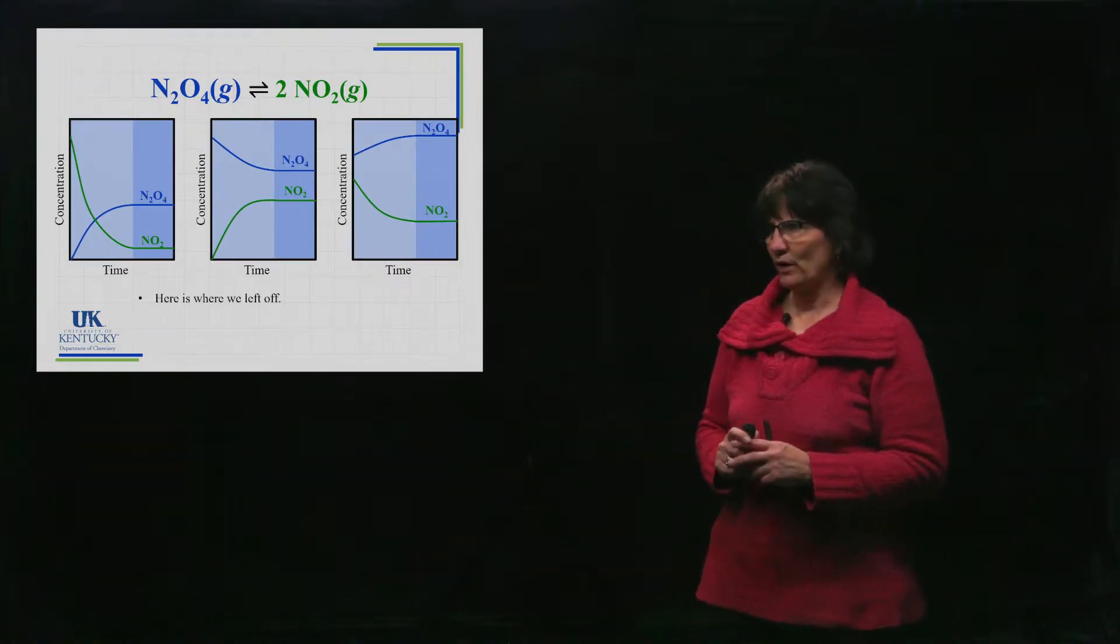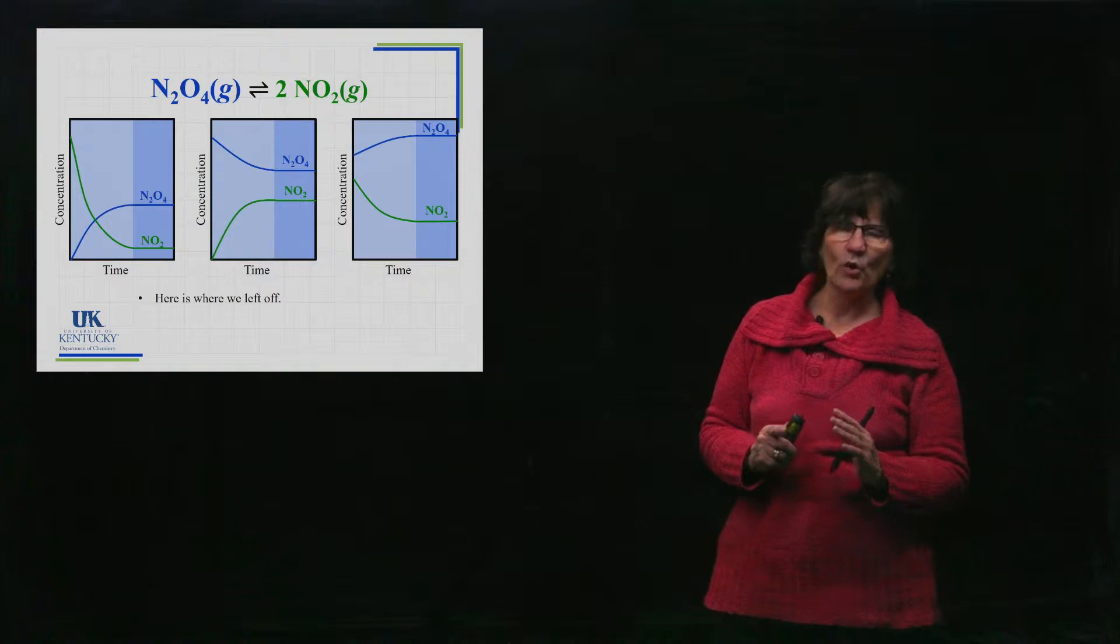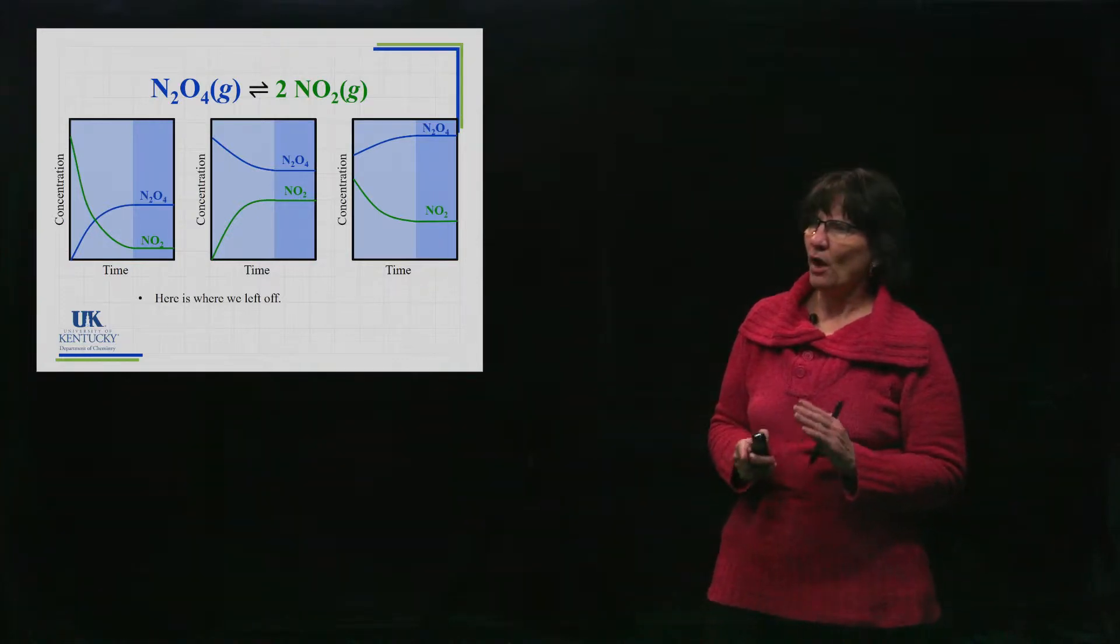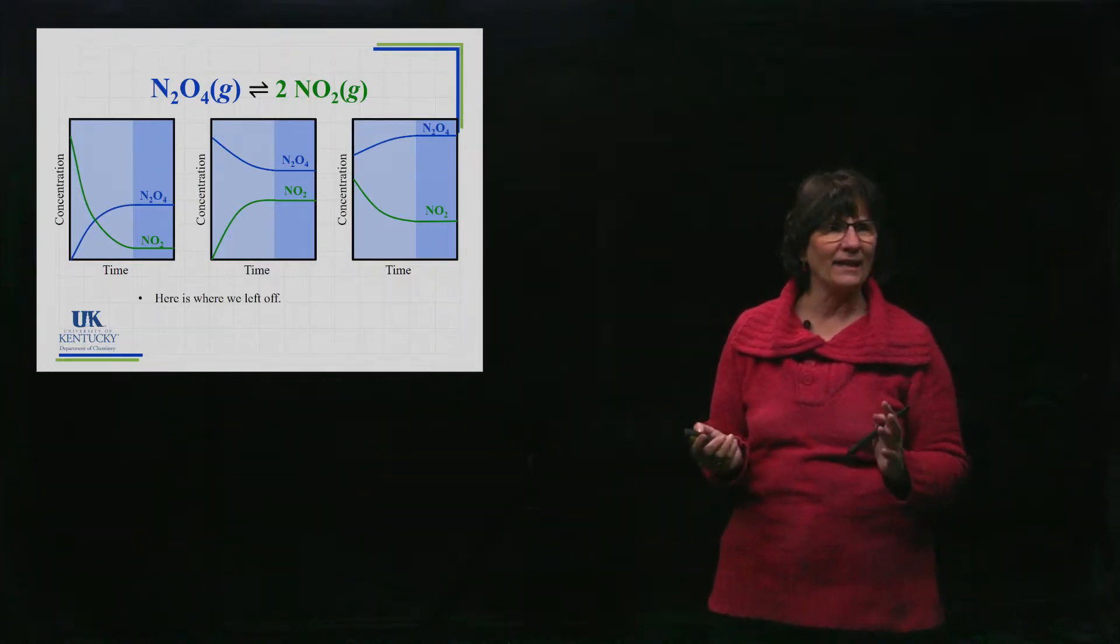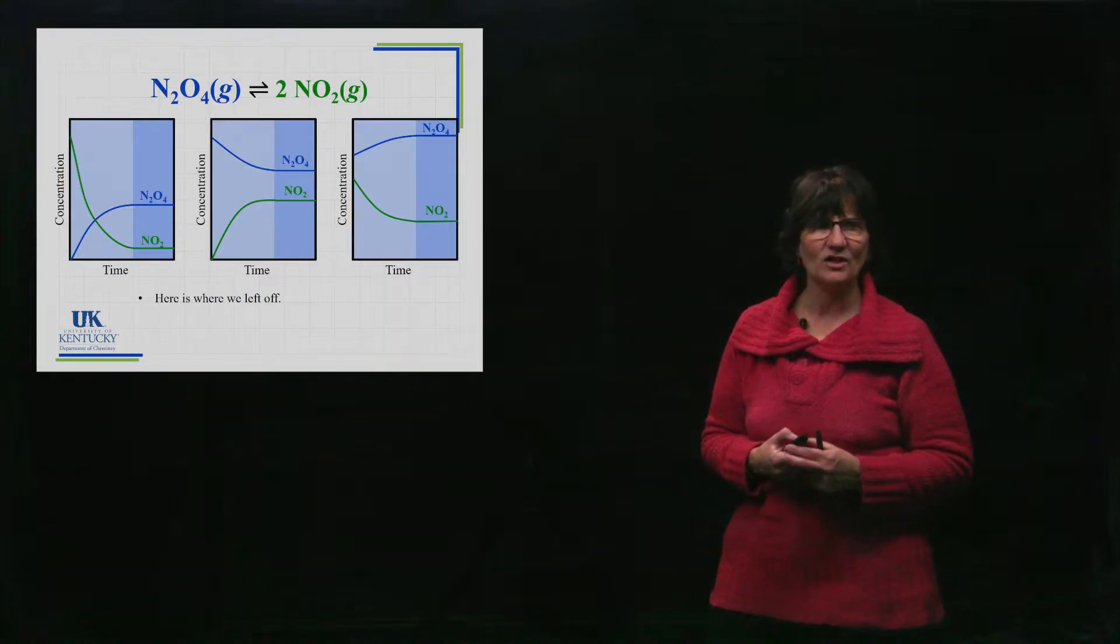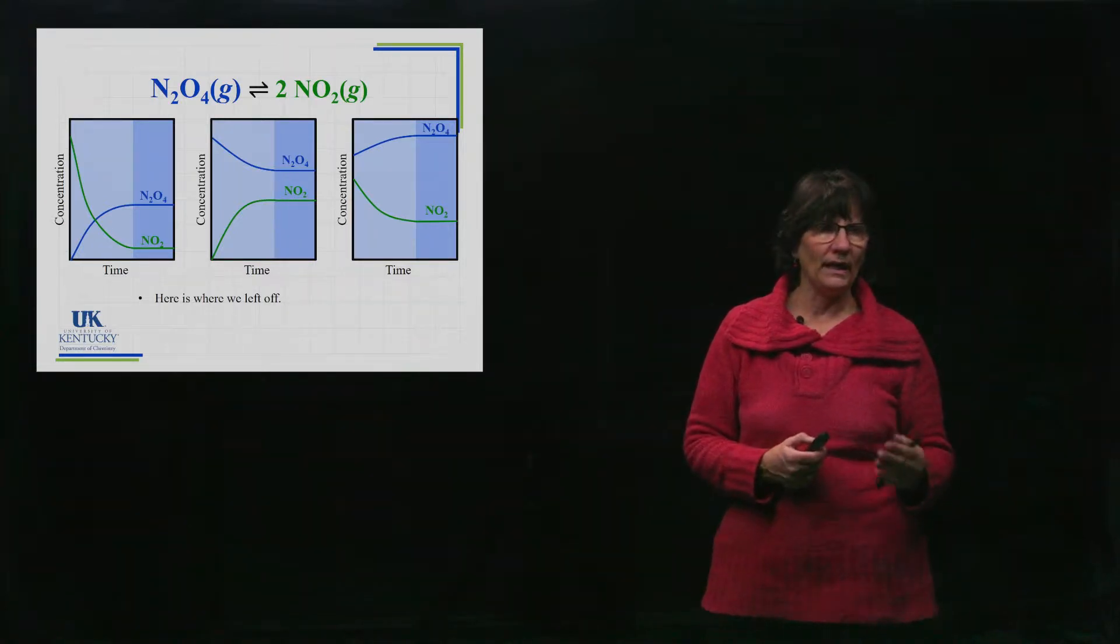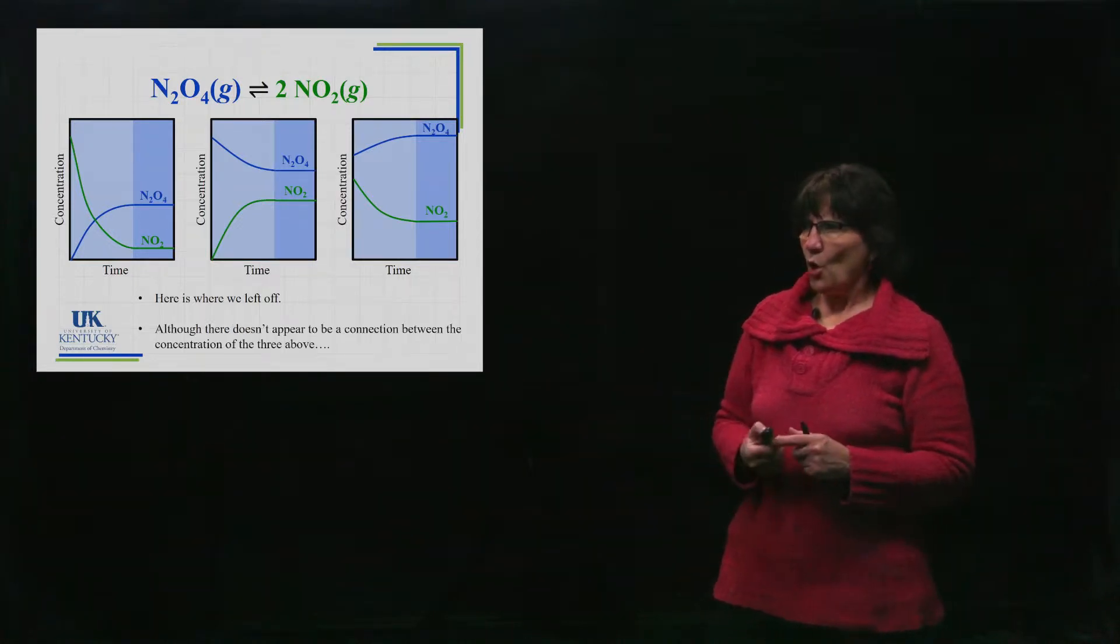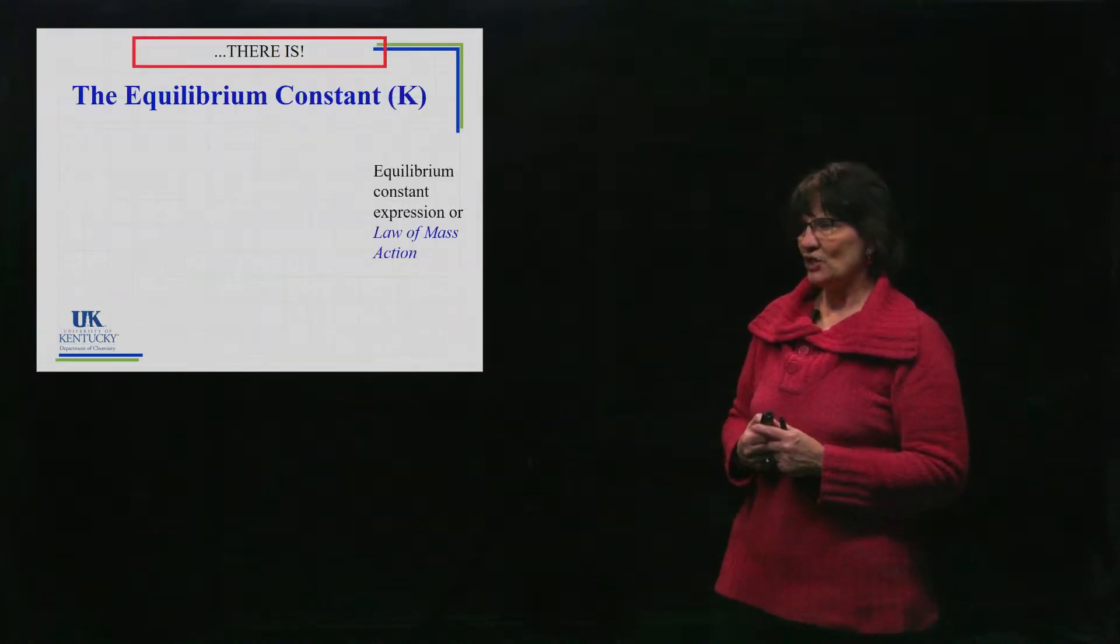Okay, so there's the three we left off with. We see that at some point we reach equilibrium, but we also see that the amount of reactants and products is not the same in each. It's not like it goes to the same concentration of N2O4 and NO2 in every case.